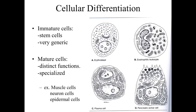A muscle cell is going to look different and have a different function than a neuron, a nerve cell. A nerve cell is going to have a different structure and function than an epidermal skin cell. What we're going to be focusing on as we go through this course is understanding what are these differences between the cells that allow them to essentially fulfill their function to keep the organism, keep the individual, alive.